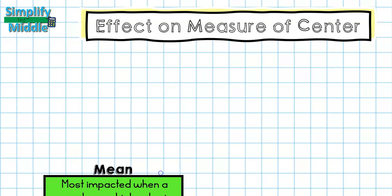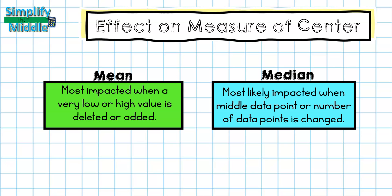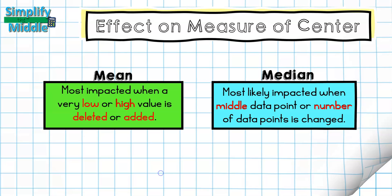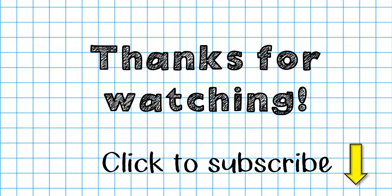Let's recap. The mean is most impacted when a very low or very high value is deleted or added. The median is impacted when the middle data point or the number of data points changes. That wraps up our lesson — thanks so much for tuning in. Feel free to click to subscribe for this and other lessons. Until next time!